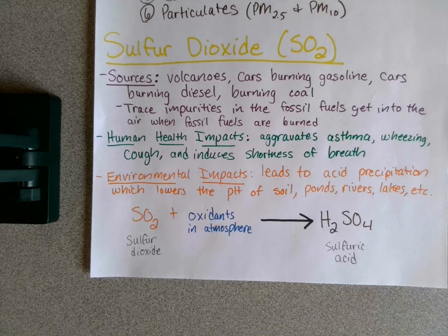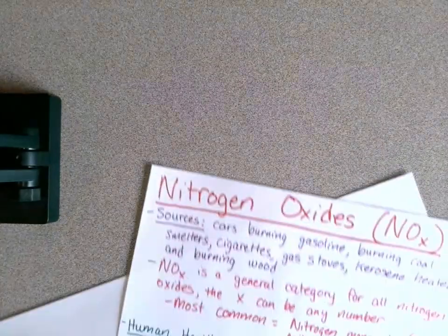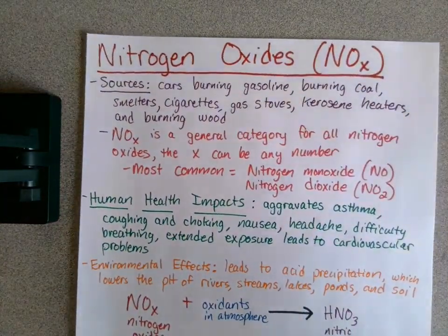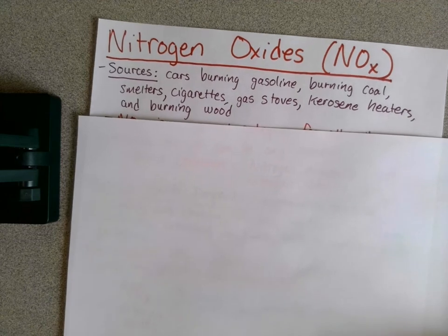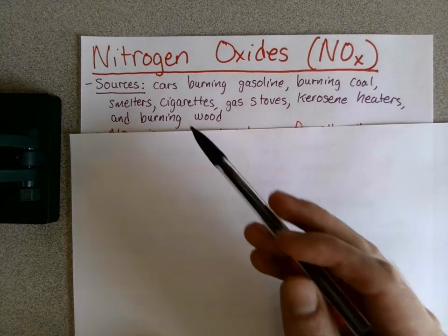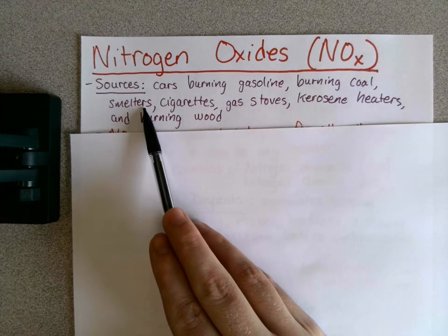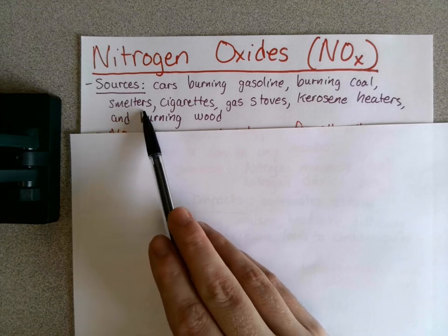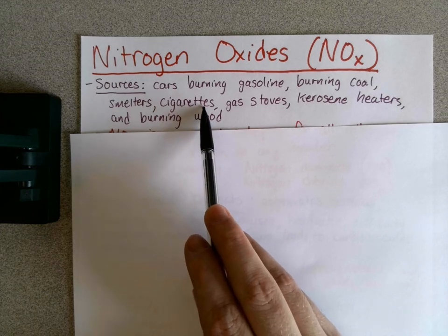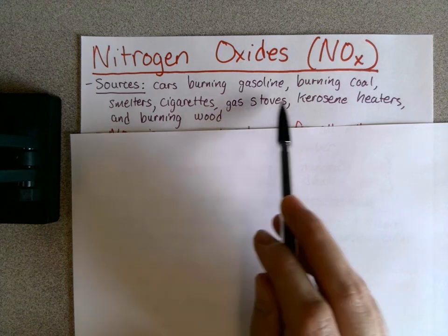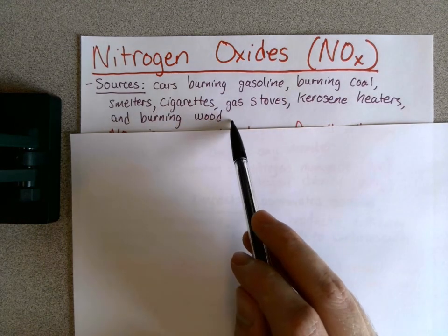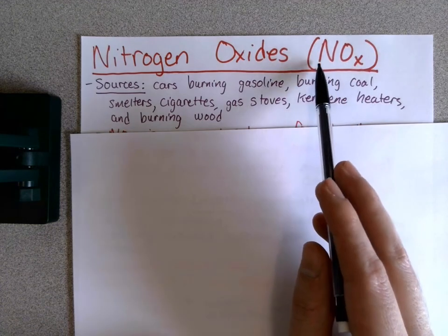The next one is NOx, or nitrogen oxides. Sources include cars burning gasoline, burning coal, smelters — where metals are mixed and heated together — smoking cigarettes especially inside, gas stoves, kerosene heaters, and burning wood in a fireplace. All of these can produce nitrogen oxides or NOx.